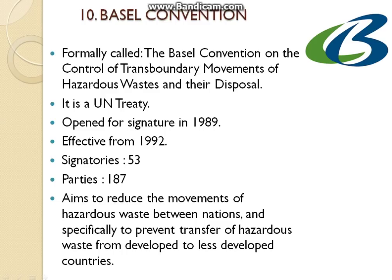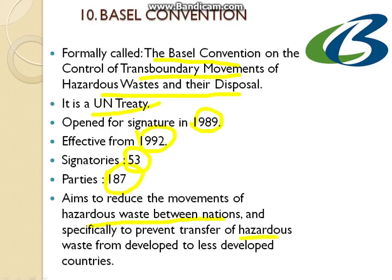The tenth one is the Basel Convention, formally called the Basel Convention on the Control of Transboundary Movements of Hazardous Wastes and Their Disposal. It's a United Nations treaty, open for signature in 1989 and effective from 1992. There are 53 signatories but 187 parties. Its aim is to reduce the movement of hazardous waste between nations, and specifically to prevent the transfer of hazardous waste from developed to less developed countries.